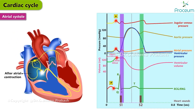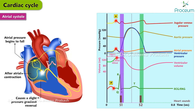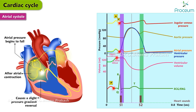After atrial contraction is complete, atrial pressure begins to fall, causing a slight pressure gradient reversal across the atrioventricular valves. This fall in atrial pressure following the peak of the A wave is termed the X descent, seen on the JVP. As pressures within the atria fall, the atrioventricular valves float upwards to their pre-closure position.